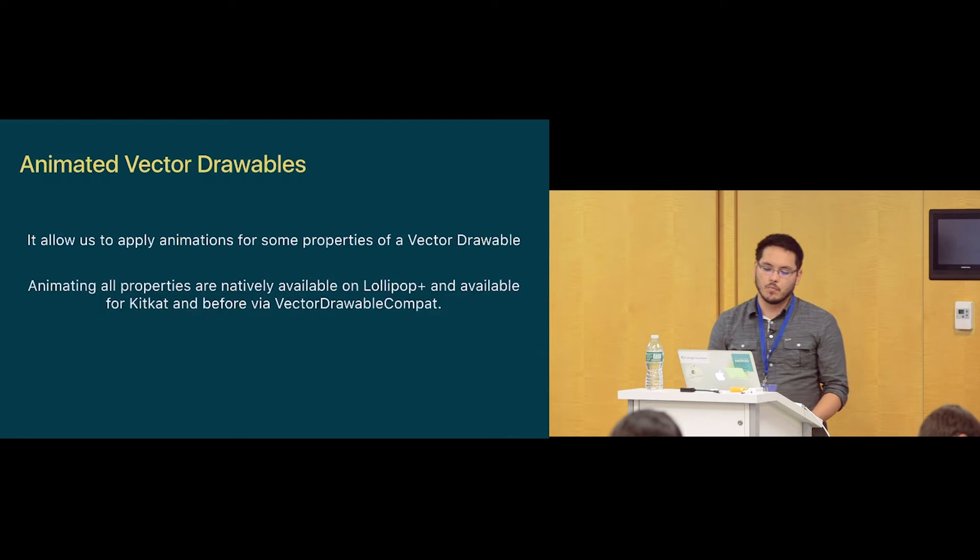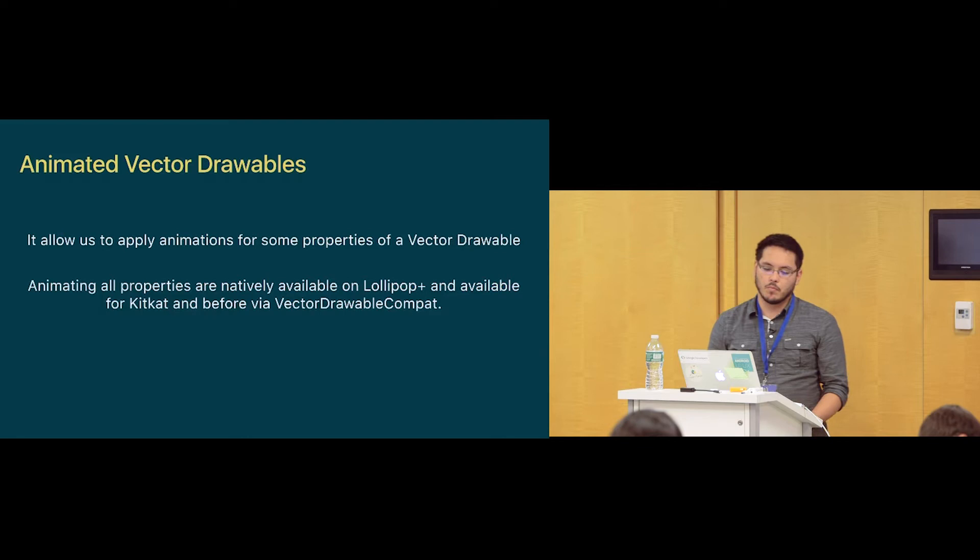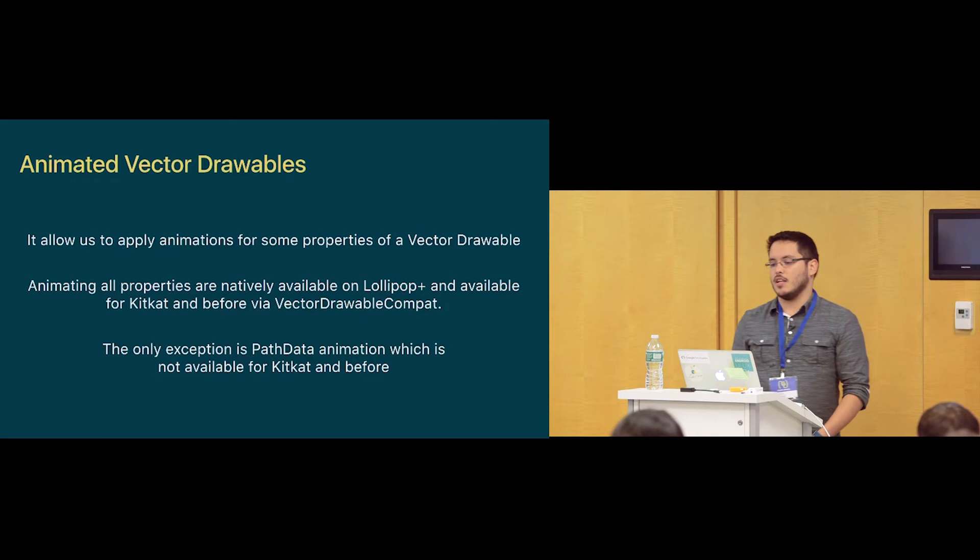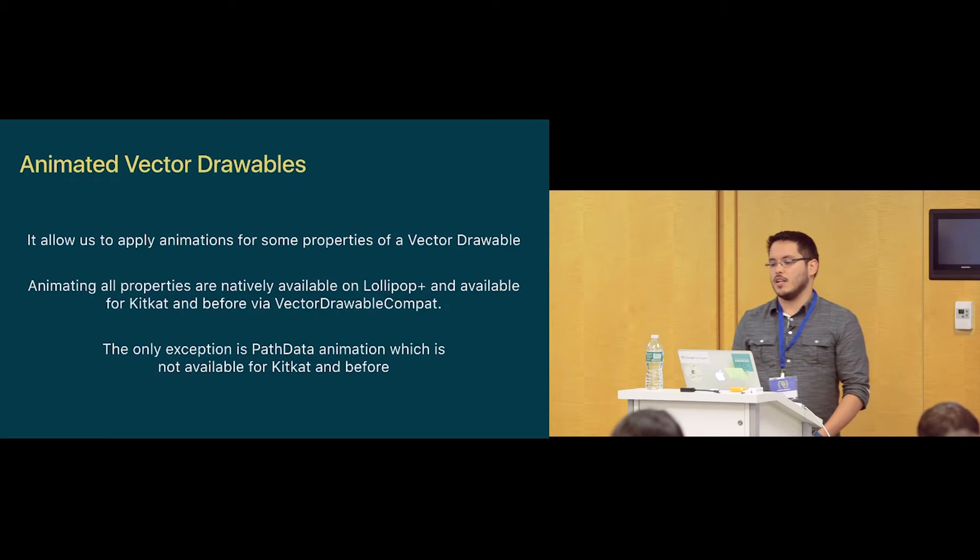All animated properties are natively available on Lollipop and above, and available for KitKat and before via vector drawable compat. The only thing not available in the vector drawable compat is path data animations — that's Lollipop and above only. But it's still worth taking a look at, since Lollipop is becoming the minimum almost soon.